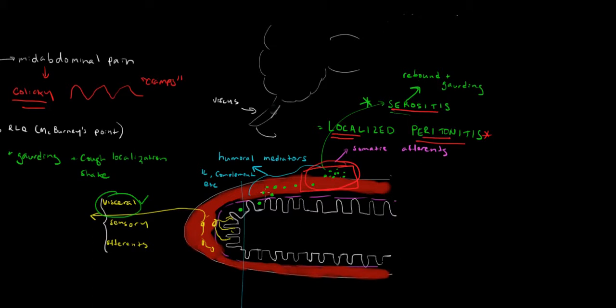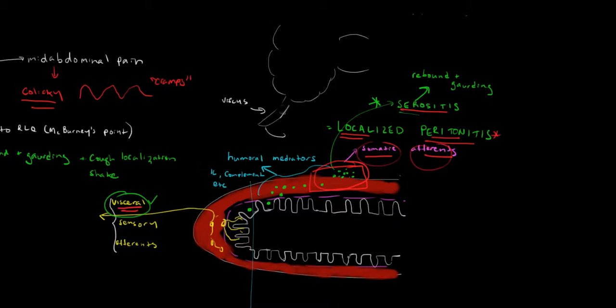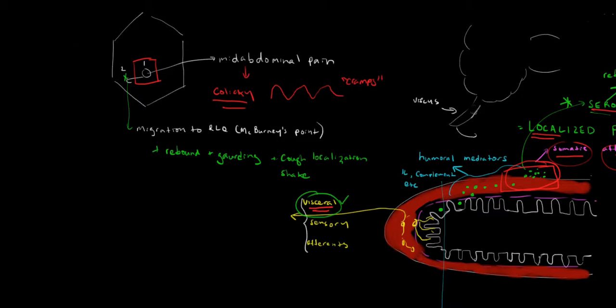And the pain goes from visceral pain, it transitions to somatic pain. And the mediators that are now picking it up are a type of mediator that's called somatic afferents. And what happens clinically to the patient? The pain migrates. Step two. The pain migrates from vague referred pain in the mid-abdomen to specific pain above the appendix in McBurney's point.